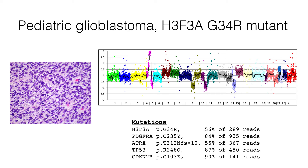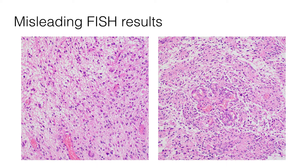Fortunately, sequencing was performed on this tumor, and we see that this is in fact a pediatric glioblastoma with an H3-G34R mutation, which is characteristic of these hemispheric tumor types. The mutations that are found are consistent with this entity, and we also see the characteristic copy number signature that includes PDGFRA amplification.